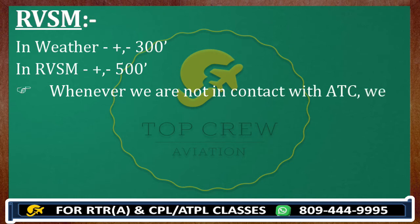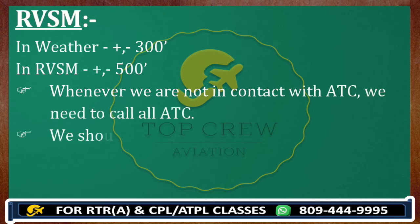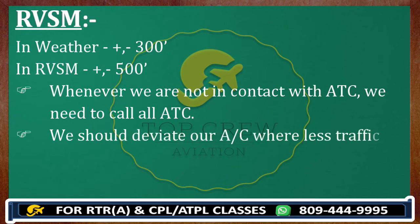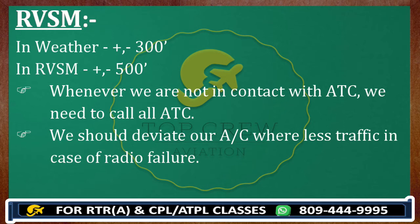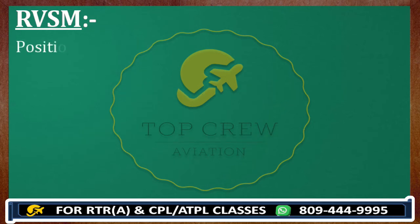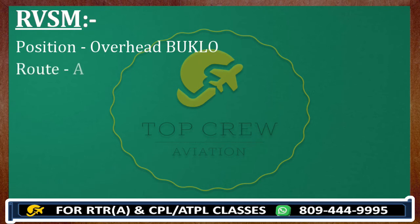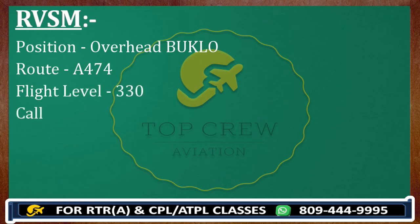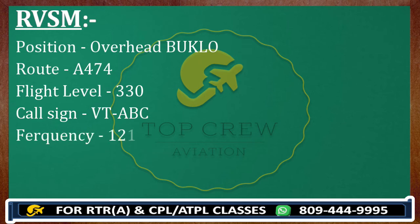Whenever ATC is not in contact, you need to call all ATC stations. You should deviate your aircraft toward where there is less traffic in case of radio failure. For example, assume you are overhead Boklo, your route is Alpha 474, flight level 330. Whenever we are not in contact with ATC — say flying Delhi to Mumbai — we leave the specified route, take a right or left turn toward where less traffic is available, and maintain ±500 feet accordingly.